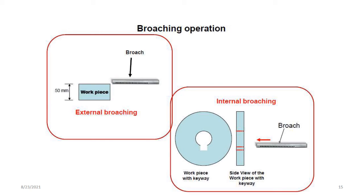The broaching operation includes external broaching and internal broaching. In external broaching, you can see the workpiece — at the top surface of the material, a very small amount of material is removed, for example reducing from 50 mm to 48 mm — 2 mm of material removed from the top surface of the workpiece. This is the external broaching system. In internal broaching, a very small amount of material is removed from the internal surface with the help of a multipoint cutting tool which is called a broach.